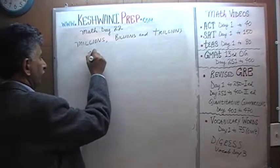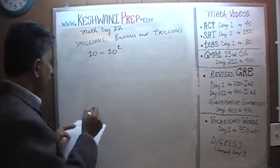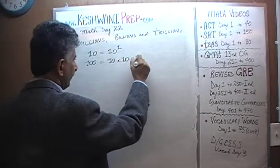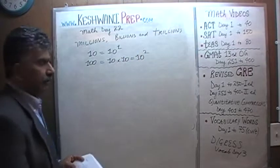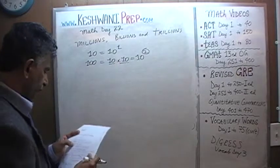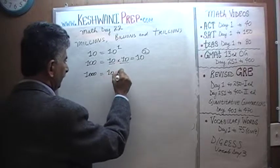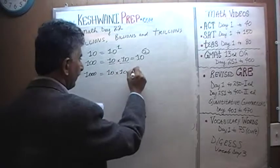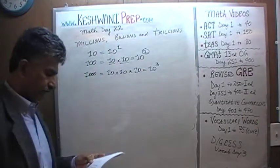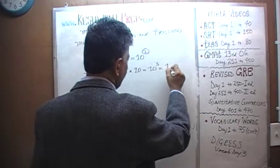Let's start with something simple. 10, of course, can be written as 10 raised to 1. A hundred, which is nothing more than 10 times 10, can be written as 10 squared. The second power tells us that we're going to multiply 10 by itself twice. A thousand is simply 10 times 10, which is a hundred, times 10 — that's 10 raised to 3, which is sometimes written as 1k.